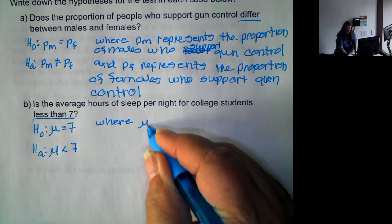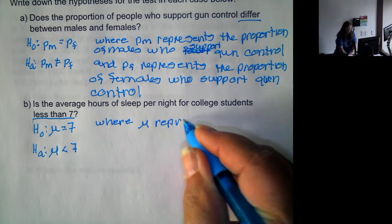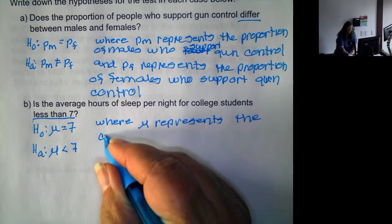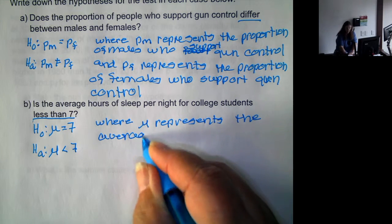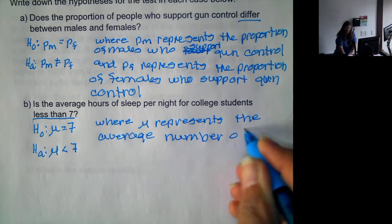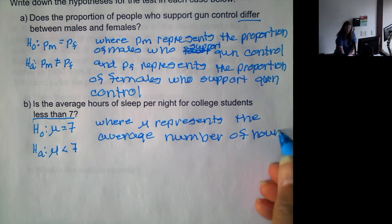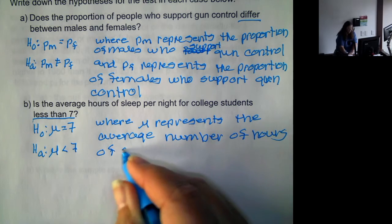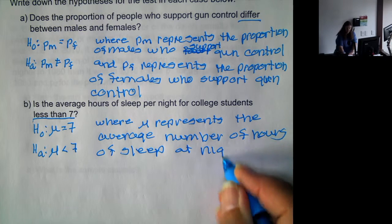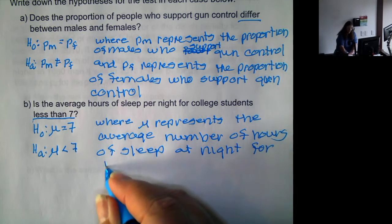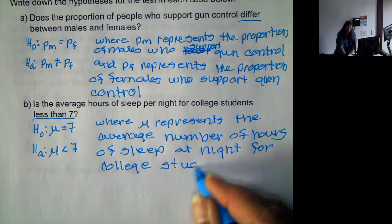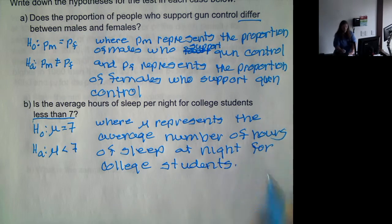So is the mean less than seven? Well, μ represents the average number of hours of sleep at night for college students.